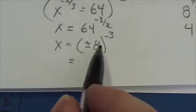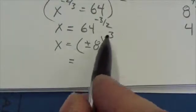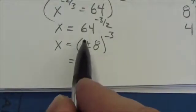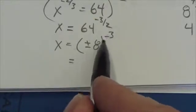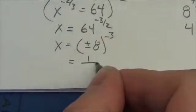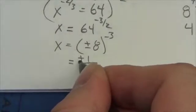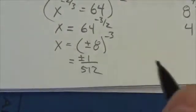Now because I'm cubing this, the cube is going to maintain the sign here, whether it's positive or negative. The negative here in the exponent is going to cause a reciprocal. So this is going to be plus or minus 1 over 512.